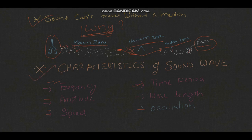Now let's look at the characteristics of a sound wave. These include: frequency, amplitude, speed, time period, wavelength, and oscillation. Oscillation is a little different, which is why it's written in a different color. I will explain all of these in detail later.